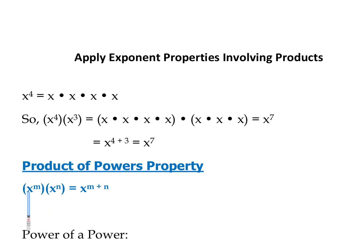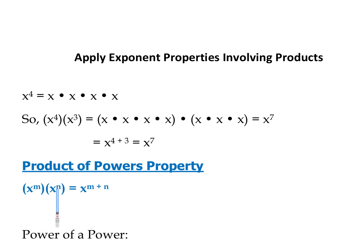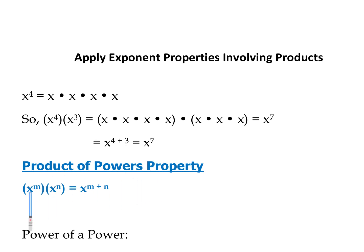Here's the general rule. With the same base — whether it's x, 5, q, or negative 8 — as long as the base is the same and we're multiplying, we add the exponents. Whatever the m and n are, we add them together. This is the product of powers property: when we're multiplying, the powers get added together.